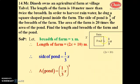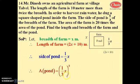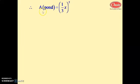The pond is square-shaped. Therefore the area of a square is side squared. So the area of the pond equals (1/3)x whole squared.